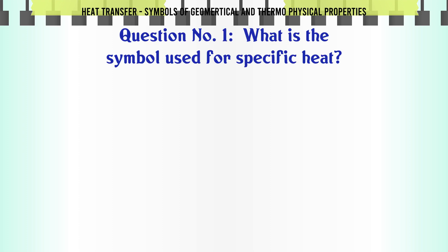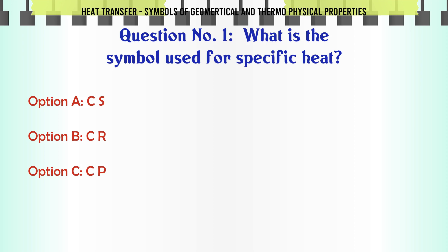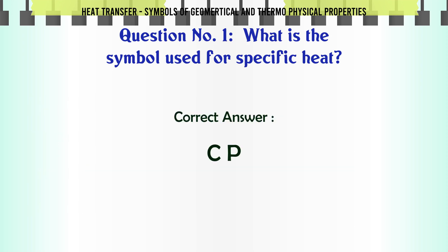What is the symbol used for specific heat? A: CS. B: CR. C: CB. D: CM. The correct answer is CP.